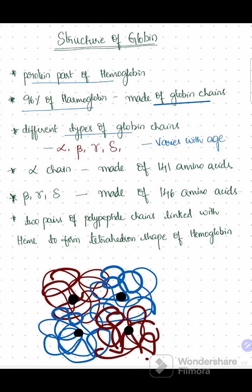There are different types of globin chains which vary with age like alpha, beta, gamma, and delta.